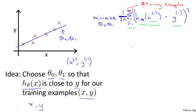And just make sure this equation is clear. This expression in here, h subscript theta of x, this is our usual, that's equal to theta 0 plus theta 1 x i.